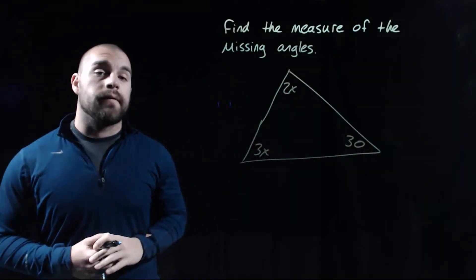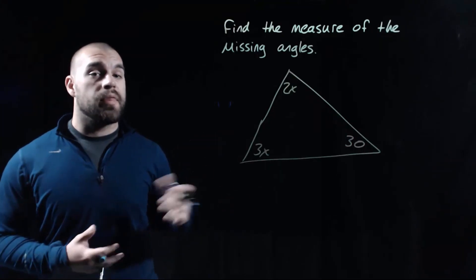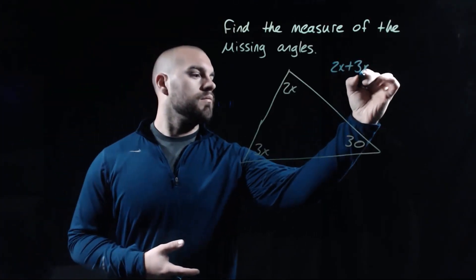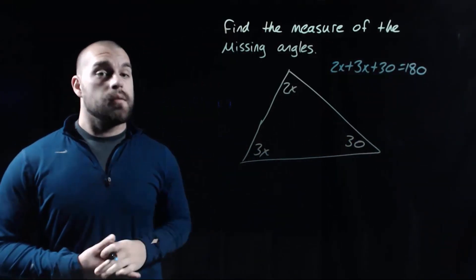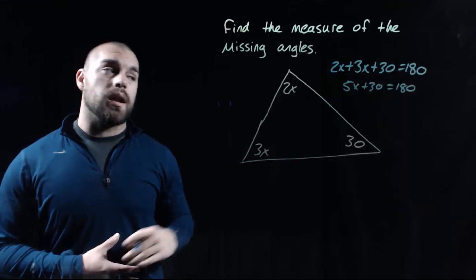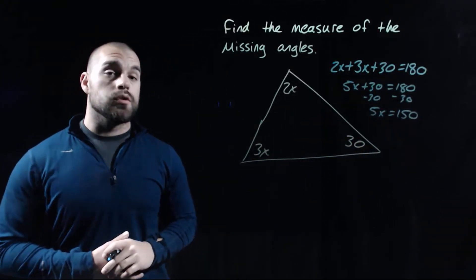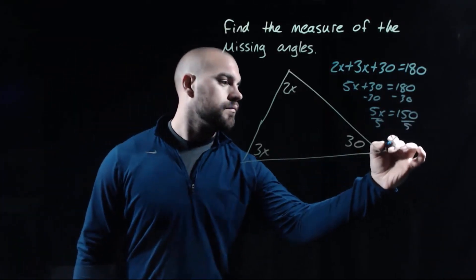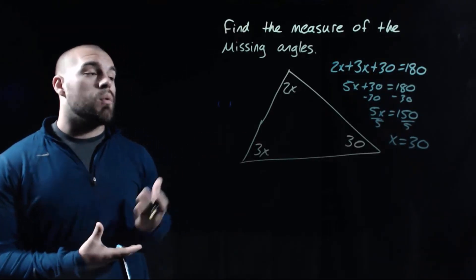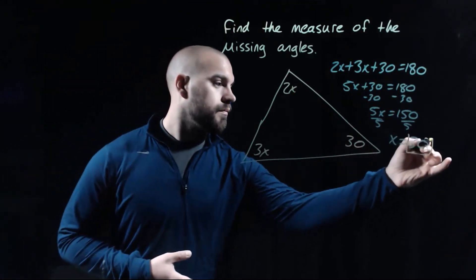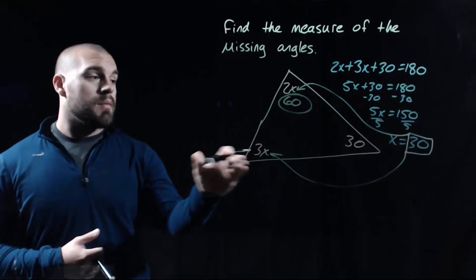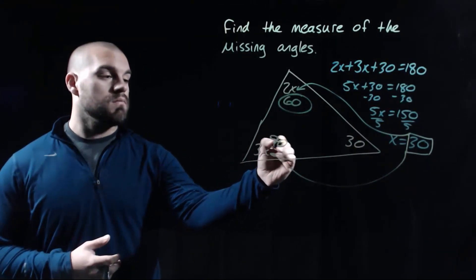Using the triangle sum theorem to find missing angle measures: the three angles must add up to 180 degrees, so we write an equation and solve for x. Combining like terms gives 5x + 30 = 180. Subtracting 30 gives 5x = 150, then dividing by 5 gives x = 30. Now we plug x back into the angles: 2 times 30 gives a 60 degree angle at the top, and 3 times 30 gives a 90 degree angle at the bottom left.